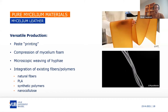Making leather with mycelium can be achieved in several ways. When growing in a bioreactor setup the biomass can be printed as a paste, but when growing the mycelium foam on a solid substrate this can be compressed into a thin and compact tissue. It's also possible to manipulate hyphae to create microscopic organized patterns similar to weaving or rope twisting, which enhances the material properties. Lastly, you can also integrate existing materials — natural fibers, polylactic acid, synthetic polymers, or nanocellulose — to create a hybrid material.